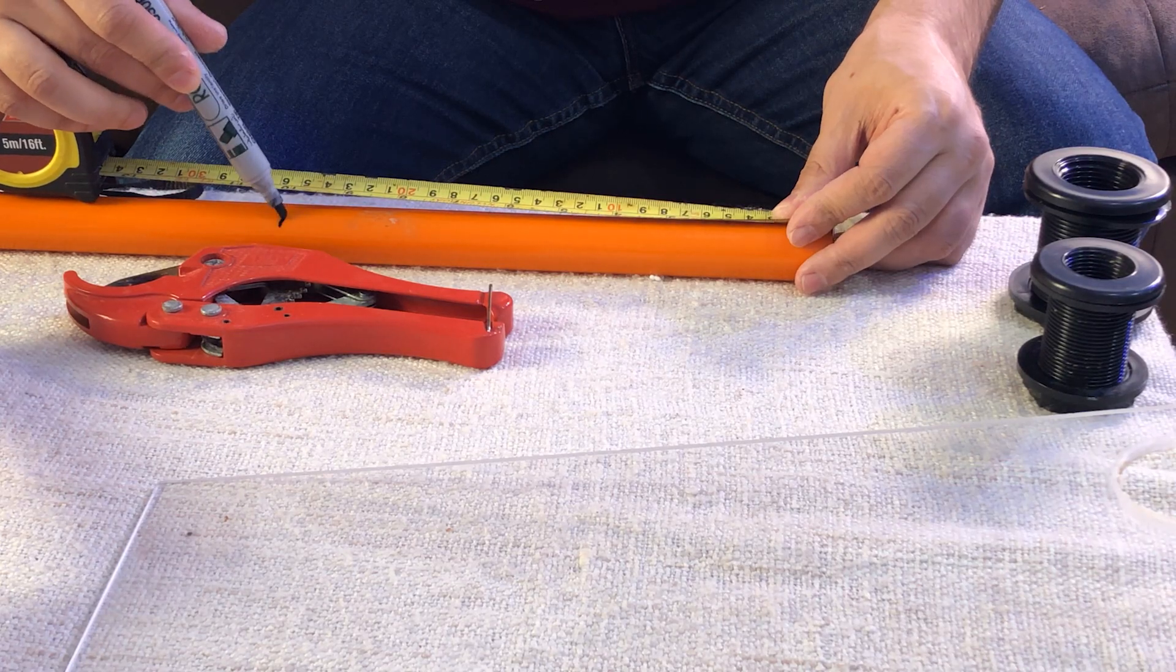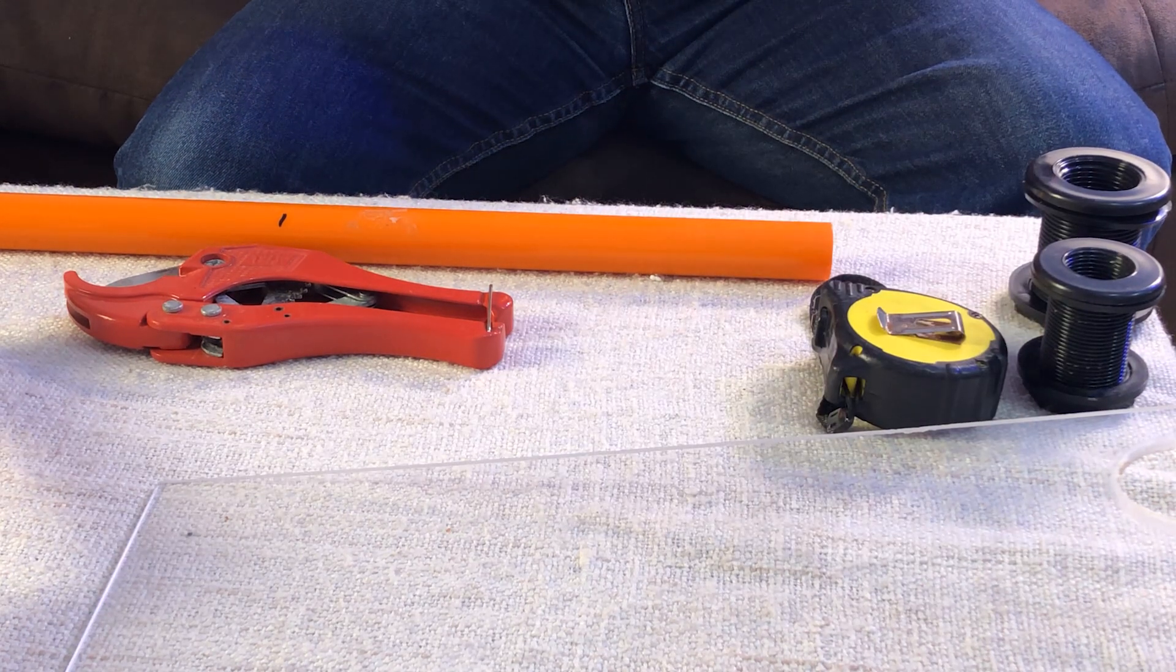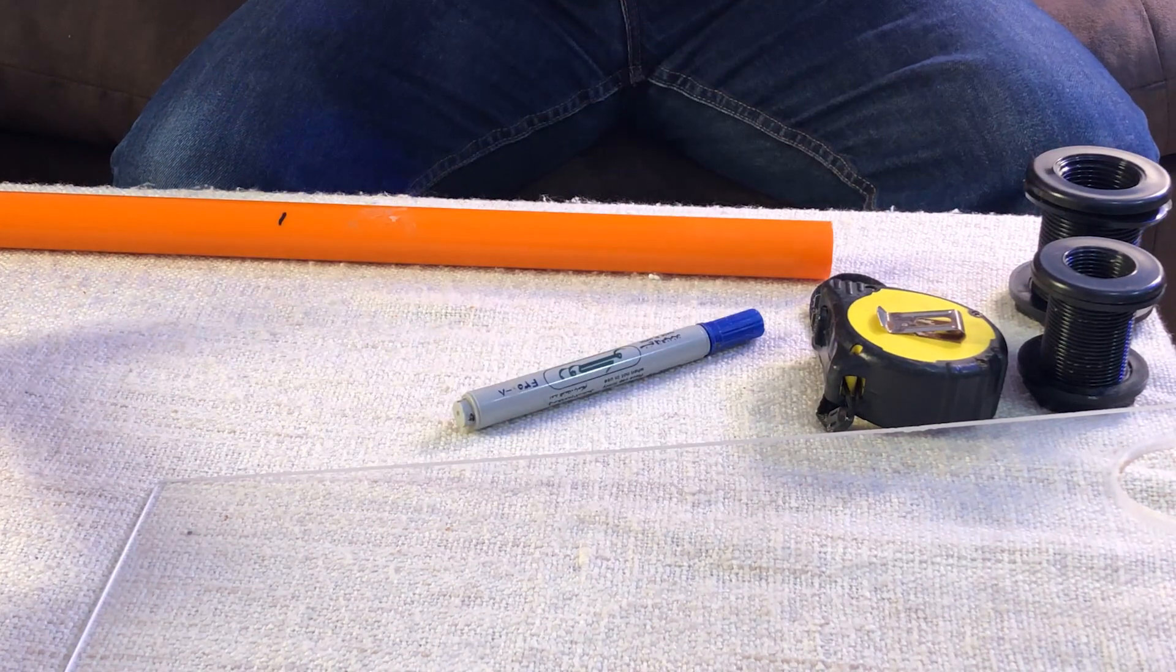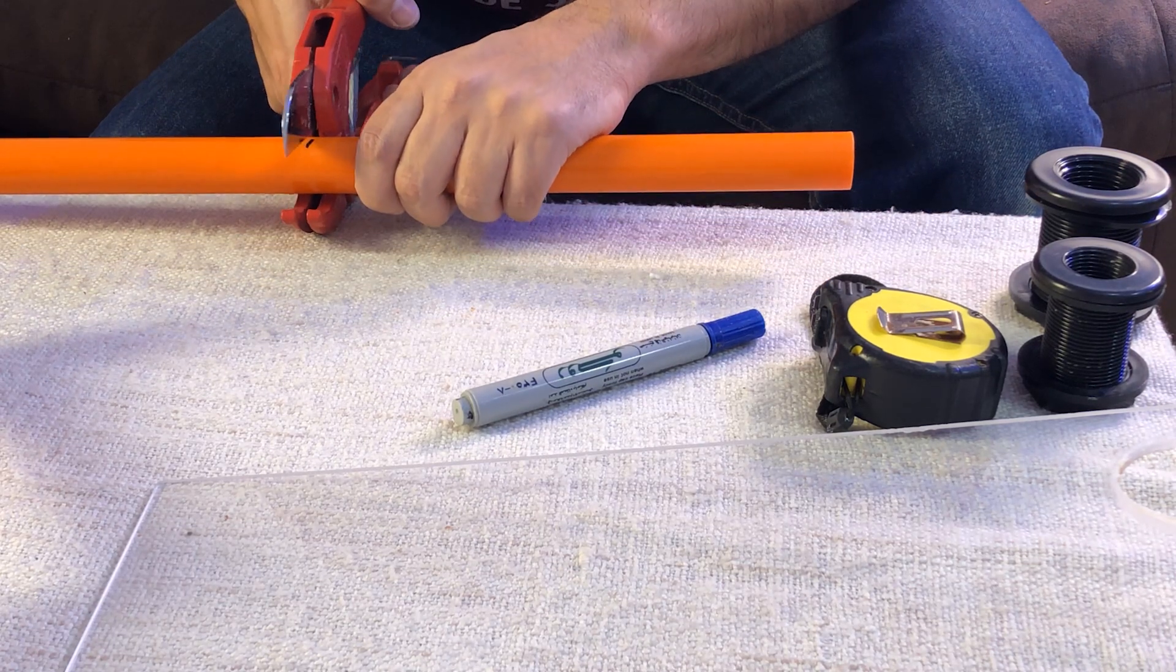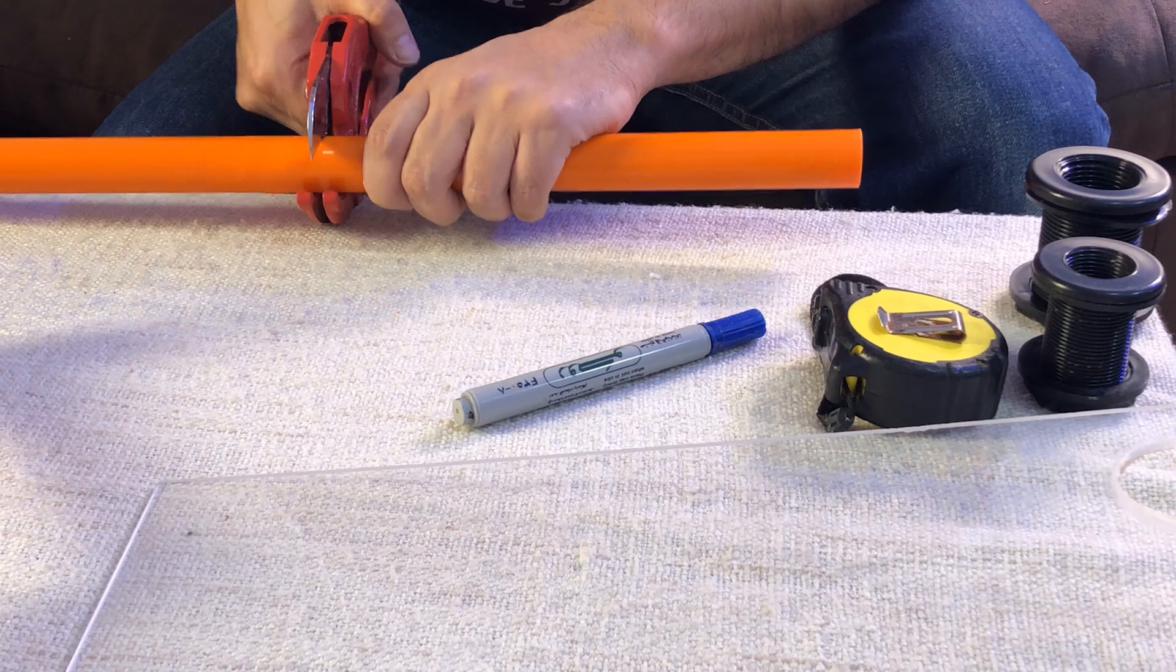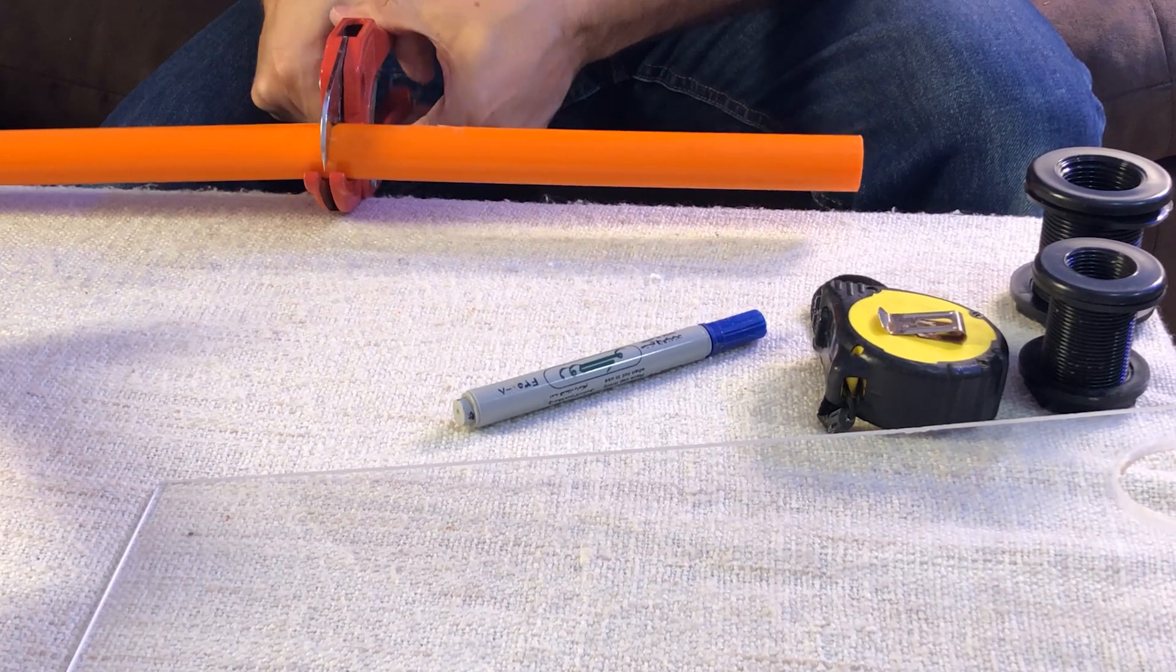To make the plumbing, we need to measure the pipe length, then cut it using a saw or this PVC cutter. PVC cutter is a lot better and easier to use and it will give us a clean cut.